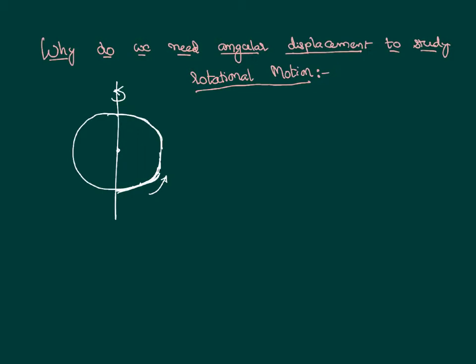Why don't we study rotational motion in terms of displacement? We know displacement is the shortest distance between the initial and final positions. When a body with a distributed mass is in rotational motion, why can't we study it using displacement itself? Why do we need a new term like angular displacement?